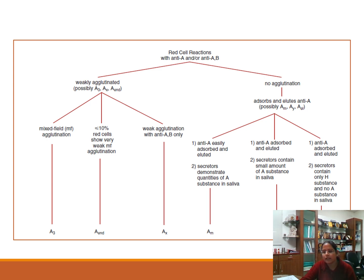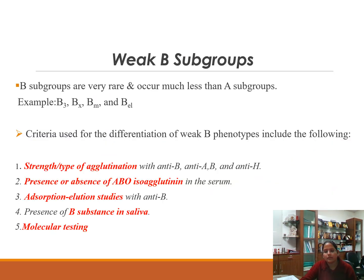A flowchart for detecting A subgroups: test red cell reactions with anti-A and anti-AB. If weak agglutination, classify based on strength — mixed field or less than 10% reaction. If no agglutination, proceed with absorption-elution study with anti-A antisera, and classify results as Am, Ay, or Al based on absorption findings.